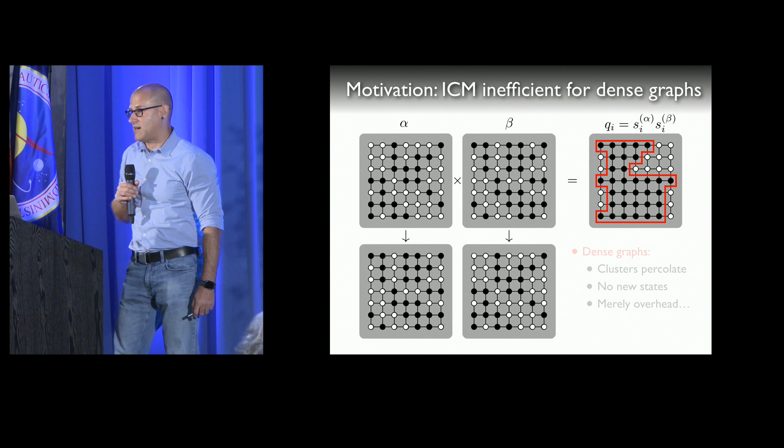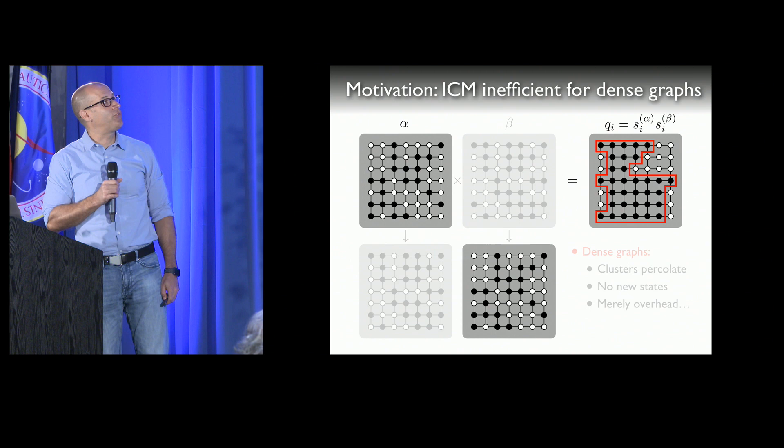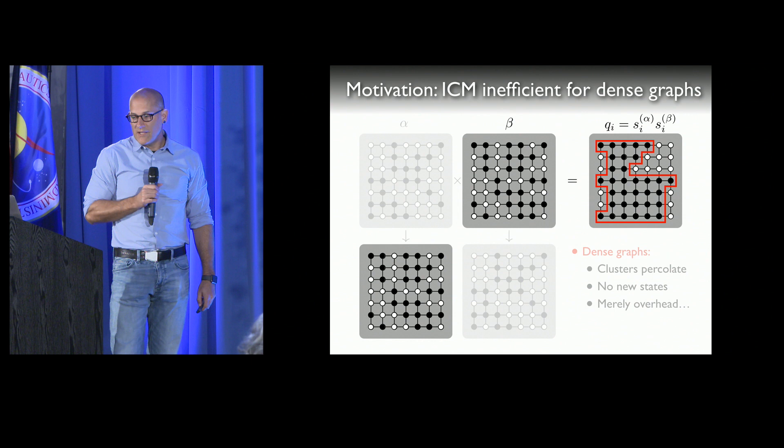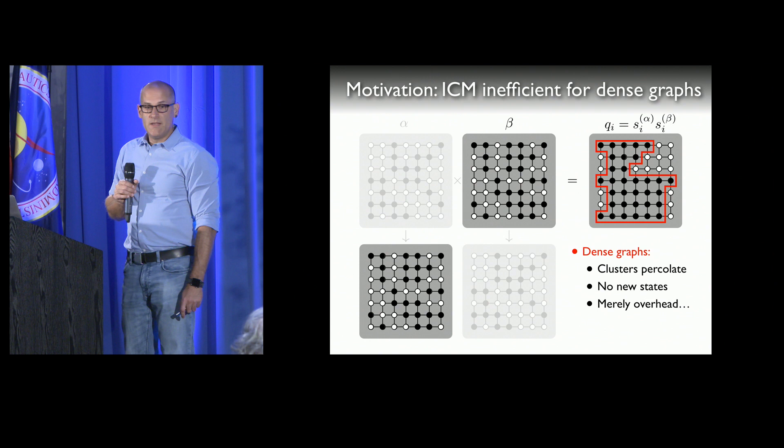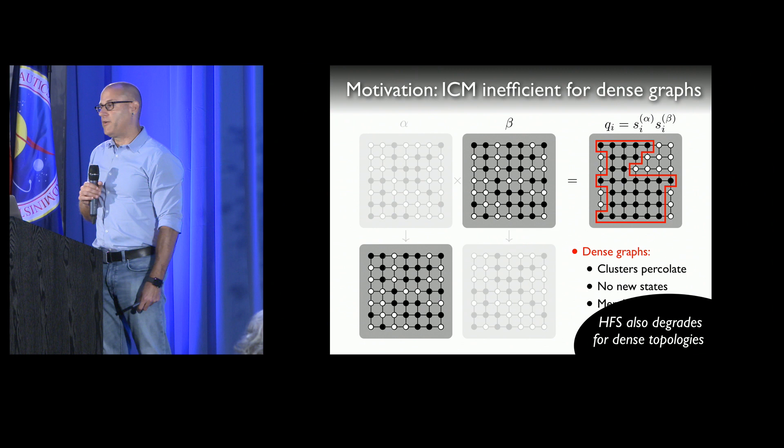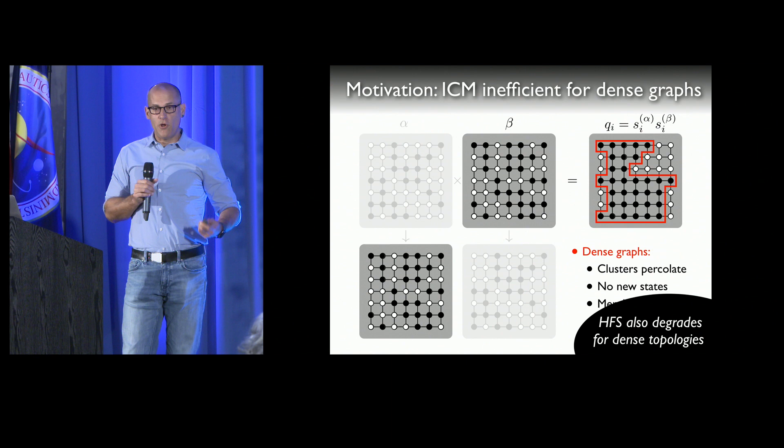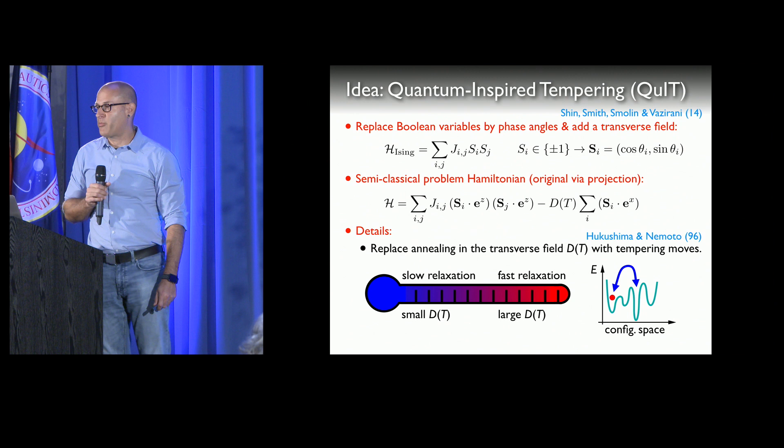This is easy to see in 2D with a contrived example: if you create the connected component as the mask for the cluster update and apply it to copies alpha and beta, all that happens is alpha goes to beta and beta goes to alpha — you don't get two new states. In dense graphs, clusters percolate, you get no new states, and it's merely overhead. Similarly, tree-based methods like HFS degrade for dense graphs. So the idea was: can we come up with something agnostic to the topology of the system?